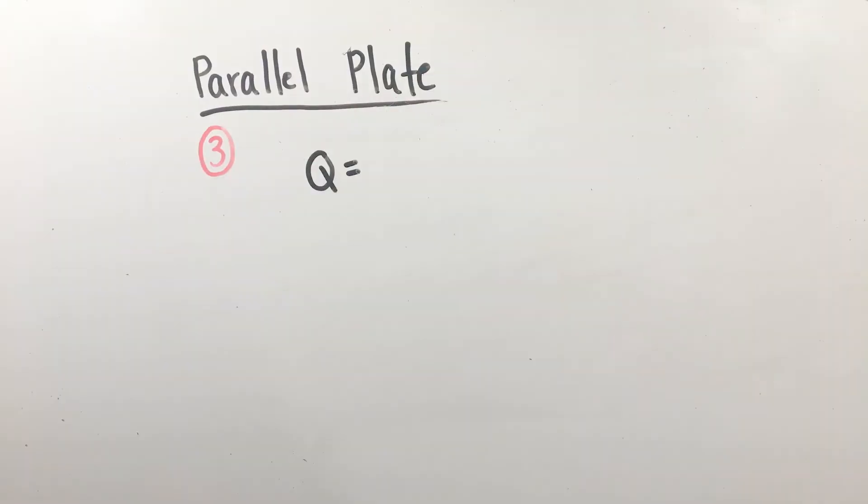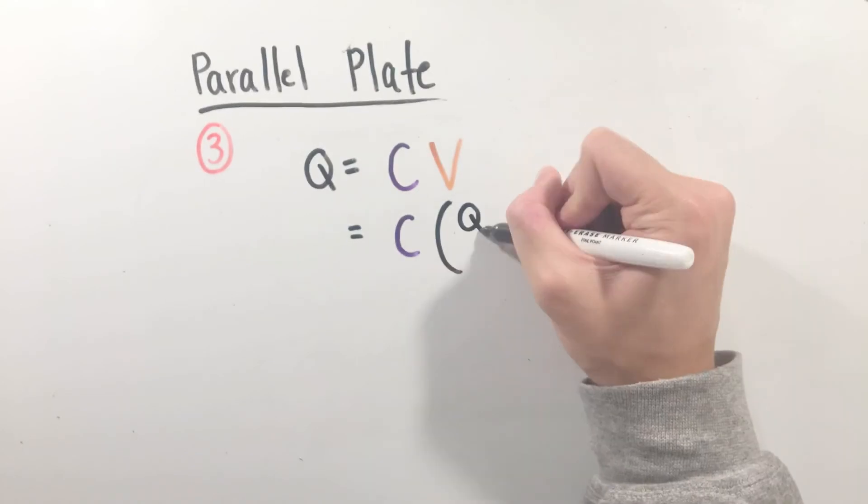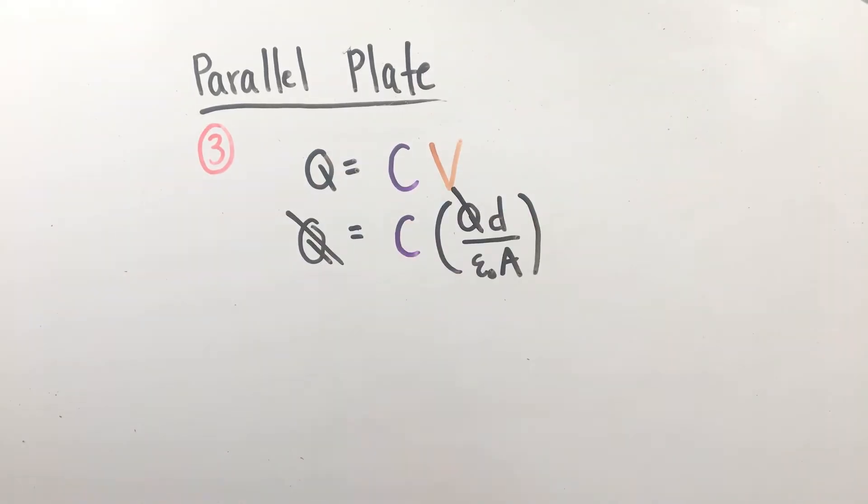For our final step, let's plug in our calculated V value with the equation Q equals CV. Realizing that our assumed variable charge Q cancels out, we can arrive at an equation for the capacitance of a parallel plate capacitor.